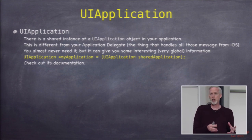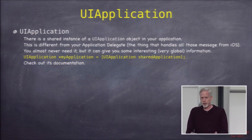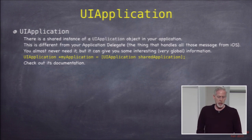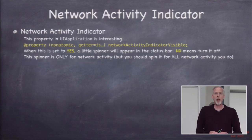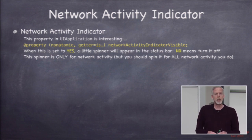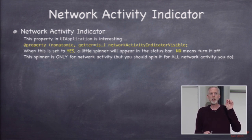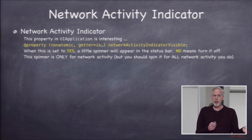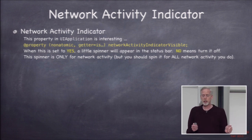UIApplication has a property called delegate that gets automatically set for you. I did want to point out one particular property on your application: the networkActivityIndicatorVisible property. This is a Boolean property. If you set it to YES, then the little spinner that shows up on the status bar — that little spinning indicator you see when you're doing network activity — turns on when your application is the active application.